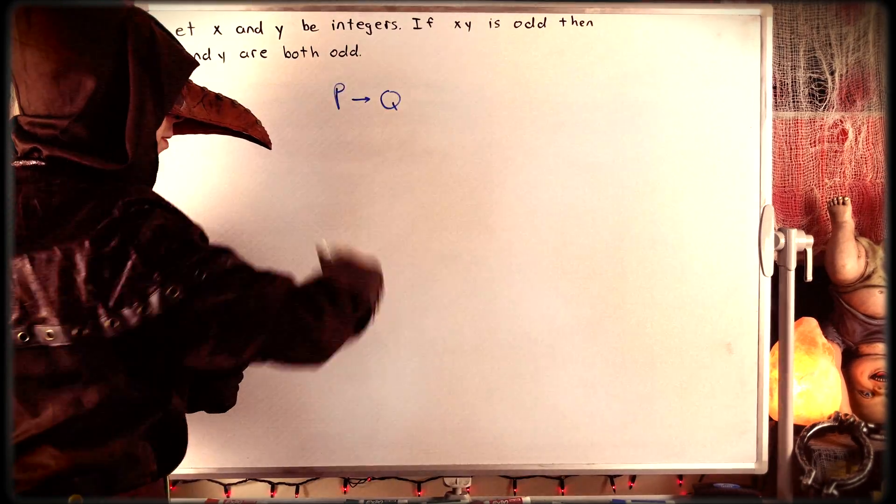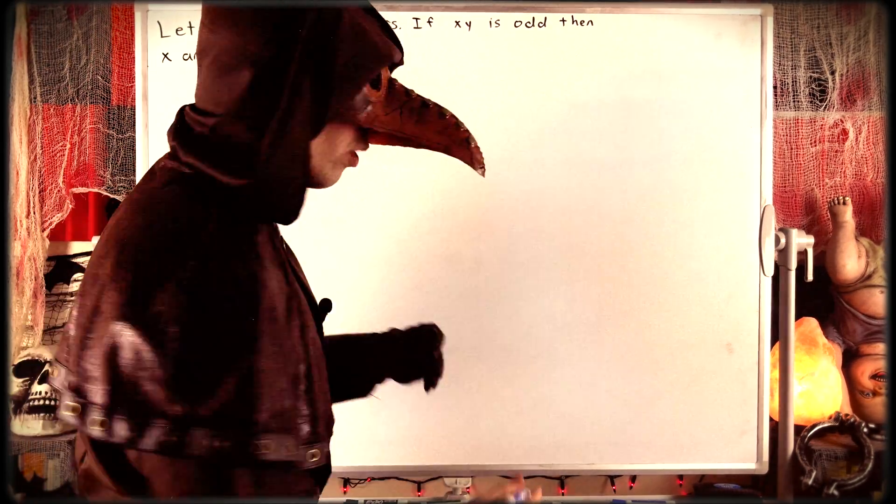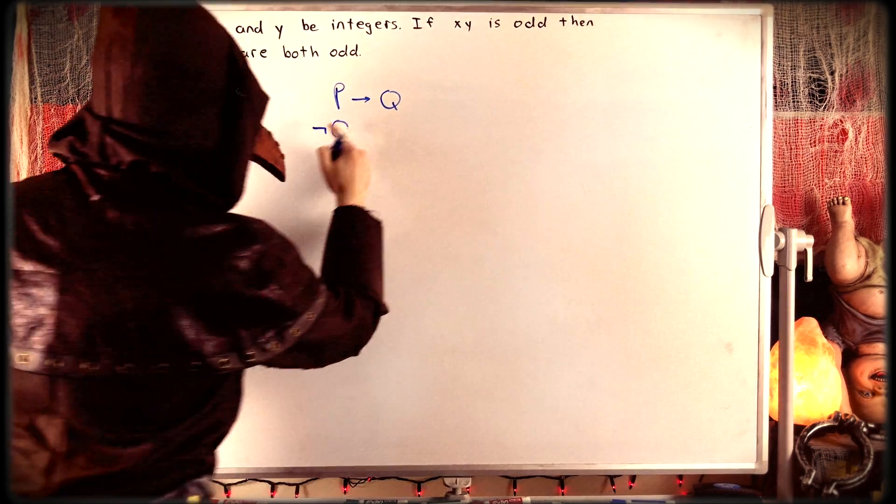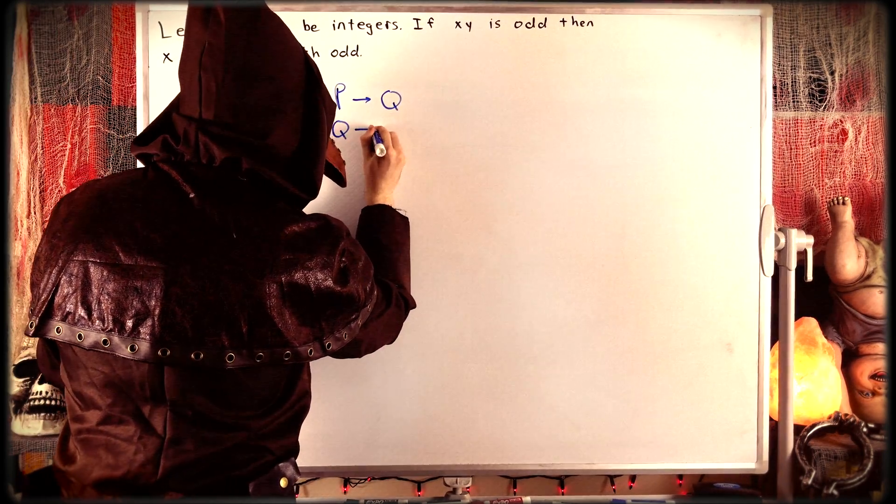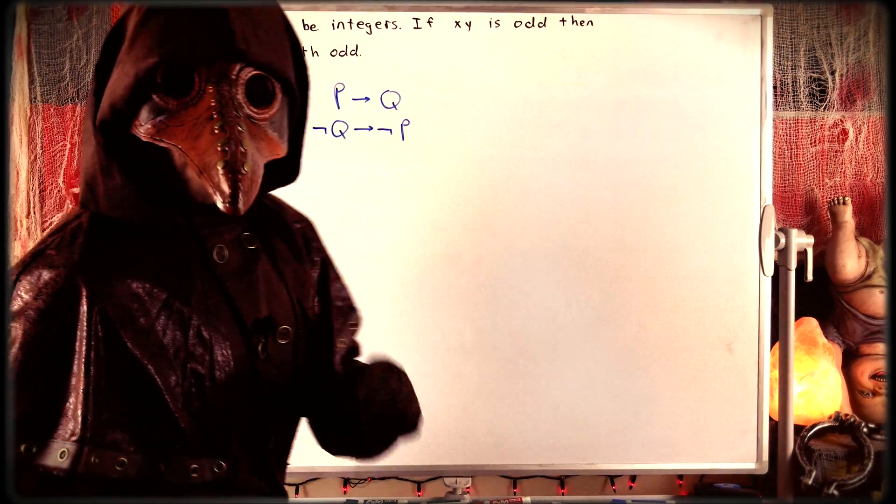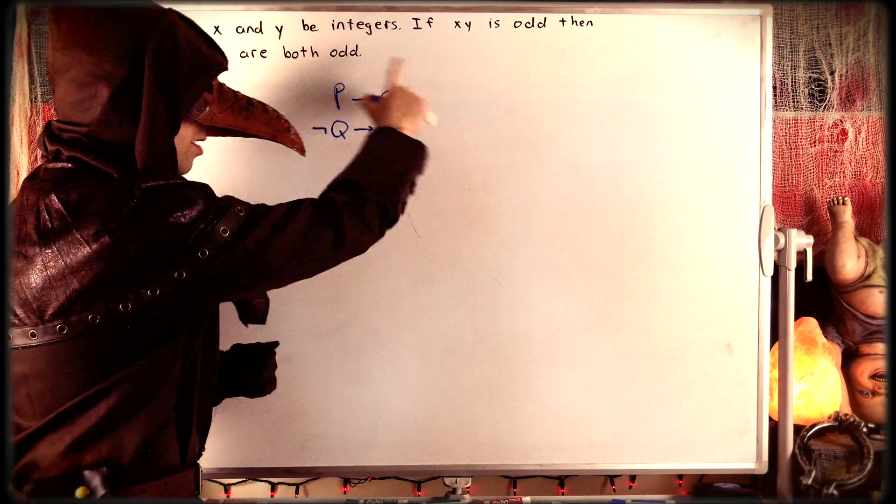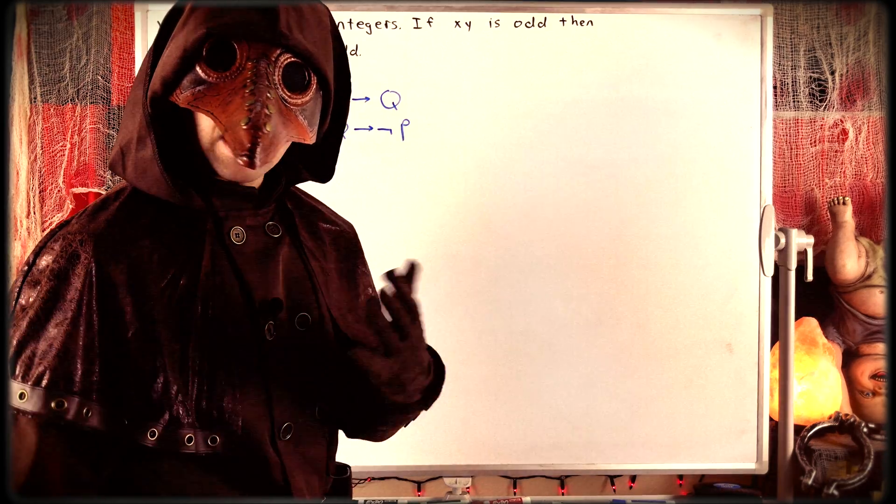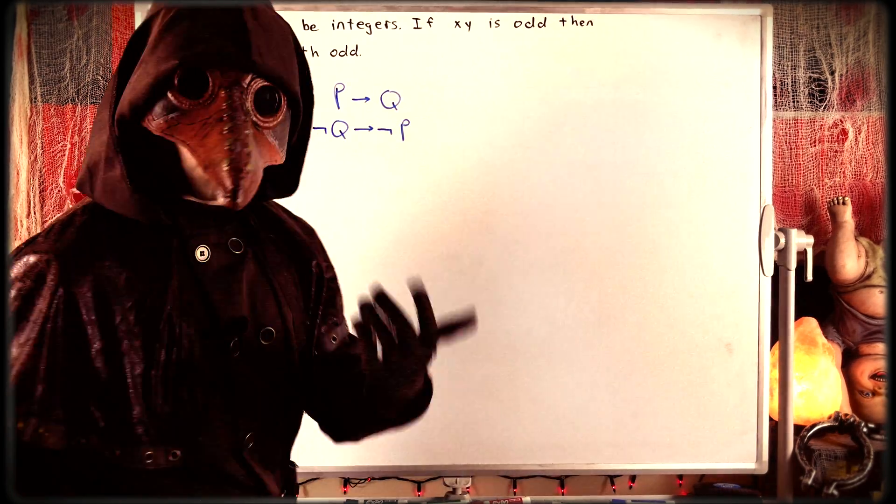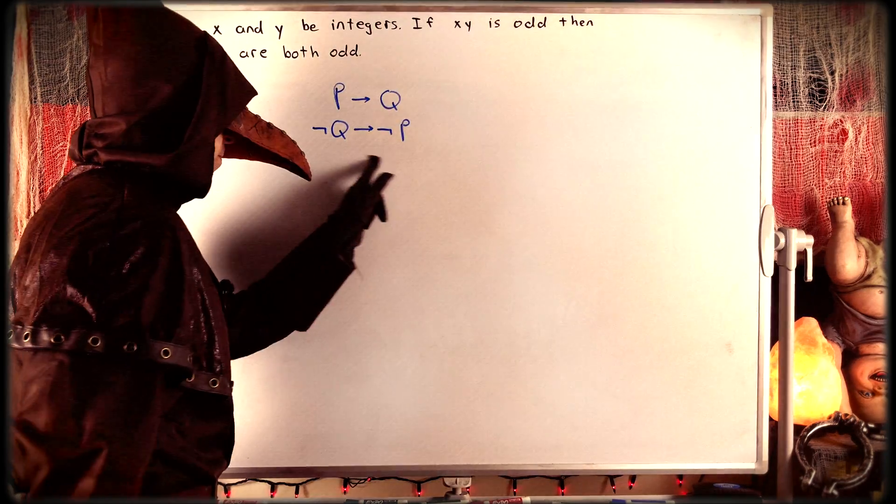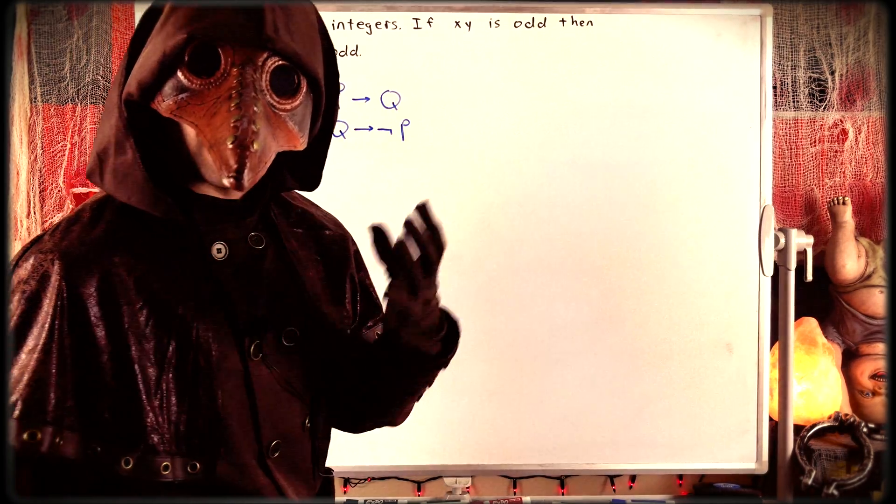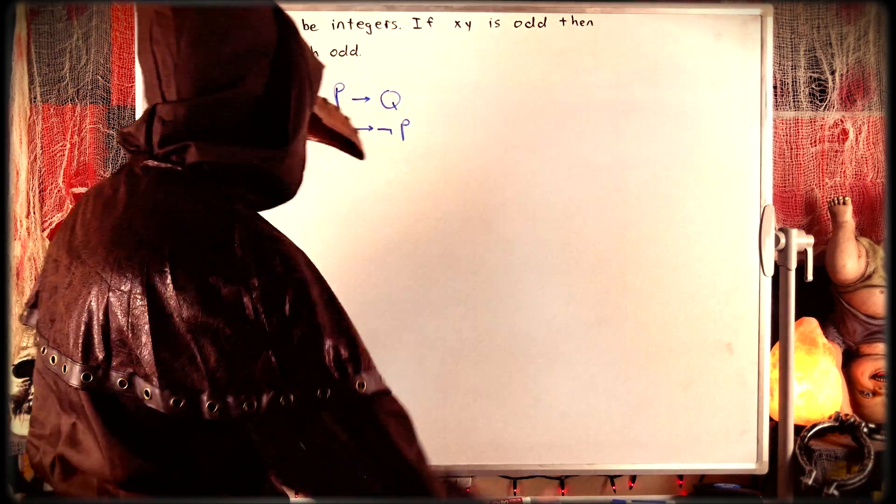The contrapositive of a statement like this is an equivalent statement that goes like this: Not q, the negation of the conclusion, implies not p, the negation of the hypothesis. So, since these are equivalent statements, in order to prove both of them, it is sufficient to prove just one. Sometimes the contrapositive of a statement is easier to prove than the original, which is why it's a useful proof technique to be familiar with.